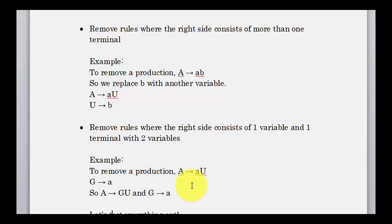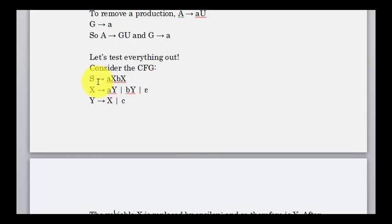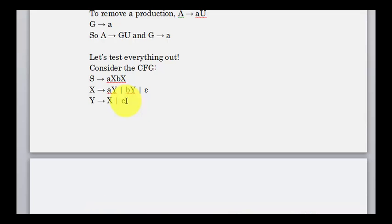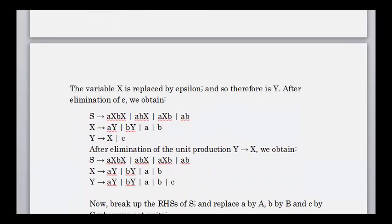Those are the five cases to watch out for. Now let's test our knowledge. Consider the CFG: S goes to AX or BX; X goes to AY or BY; Y goes to X or lowercase c. The start symbol is S. Variables are S, X, and Y, since they appear on the left-hand side. Terminals are lowercase a, b, and c — not because they are lowercase, but because there are no rules with them on the left-hand side. Now, how would you convert this grammar into Chomsky normal form?